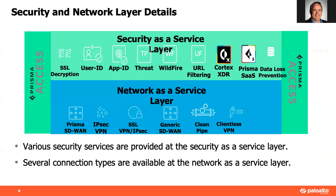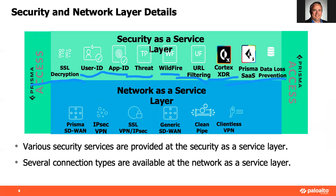Security as a service includes things you'd traditionally find on hardware devices: decryption, User ID, App ID to identify users and applications, traditional known threat protections, Wildfire for zero-day protections, URL filtering, endpoint protection with Cortex XDR, and data loss protection — along with IoT protections. The networking side includes Prisma SD-WAN, traditional IPsec VPNs terminating to cloud-based devices, clientless VPN, and remote access VPN — all now available as a subscription instead of buying hardware.